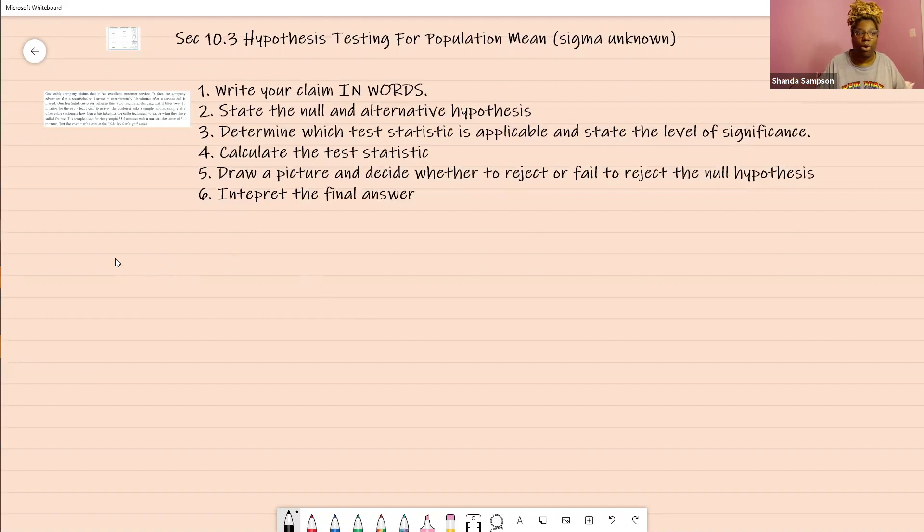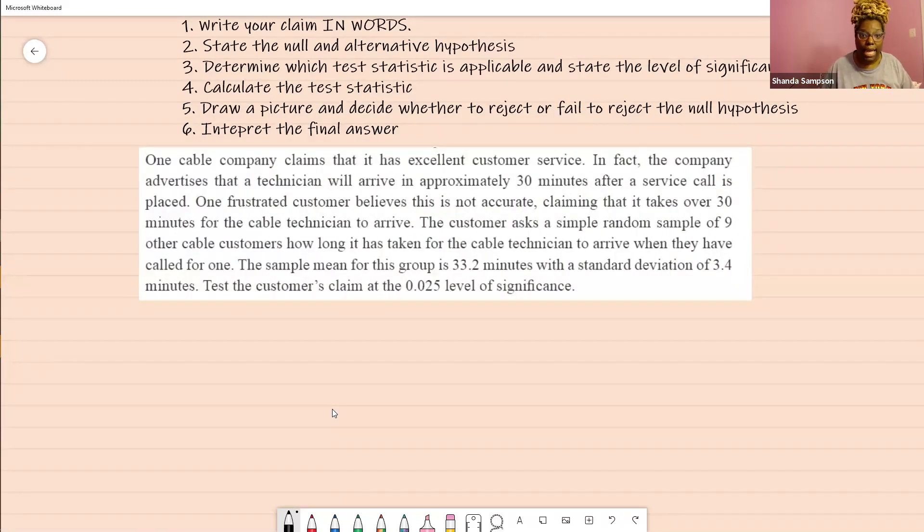Let's get started with our example. One cable company claims that it has excellent customer service. In fact, the company advertises that a technician will arrive in approximately 30 minutes after a service call. One frustrated customer believes that is not accurate, claiming that it takes over 30 minutes for the cable technician to arrive. Test the customer's claim at a 0.025 level of significance.